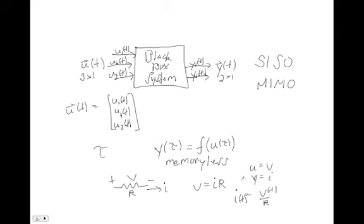Memoryless systems are quite boring, and most of the interesting systems we're going to consider are not memoryless — they actually have some sort of memory. For systems like that, hidden inside the black box there's something we call a state. In general, this state is going to be a vector, though we allow it to be a scalar. We call this the state of the system.